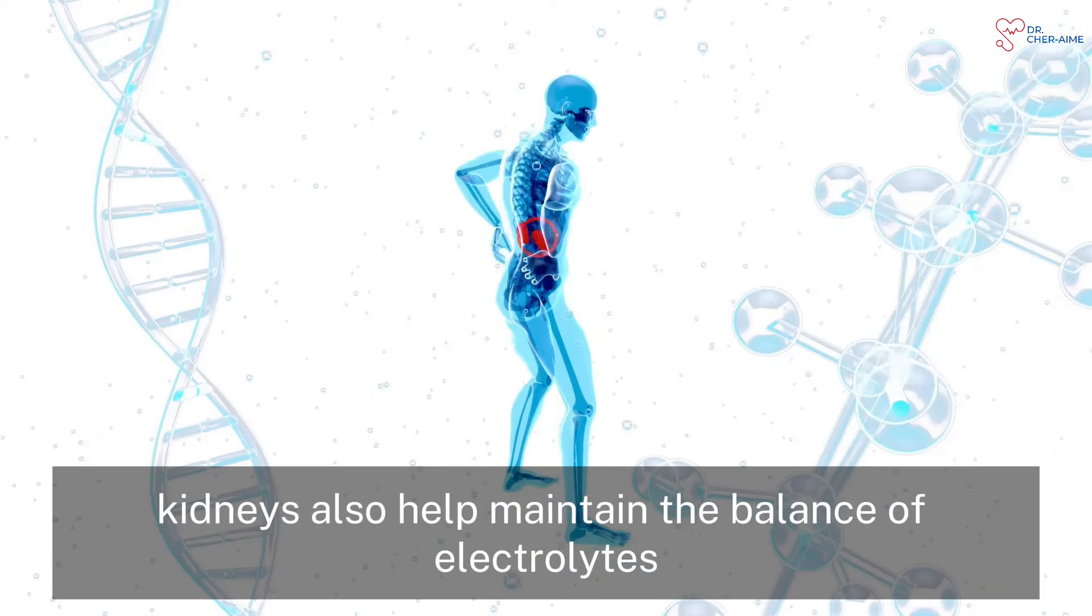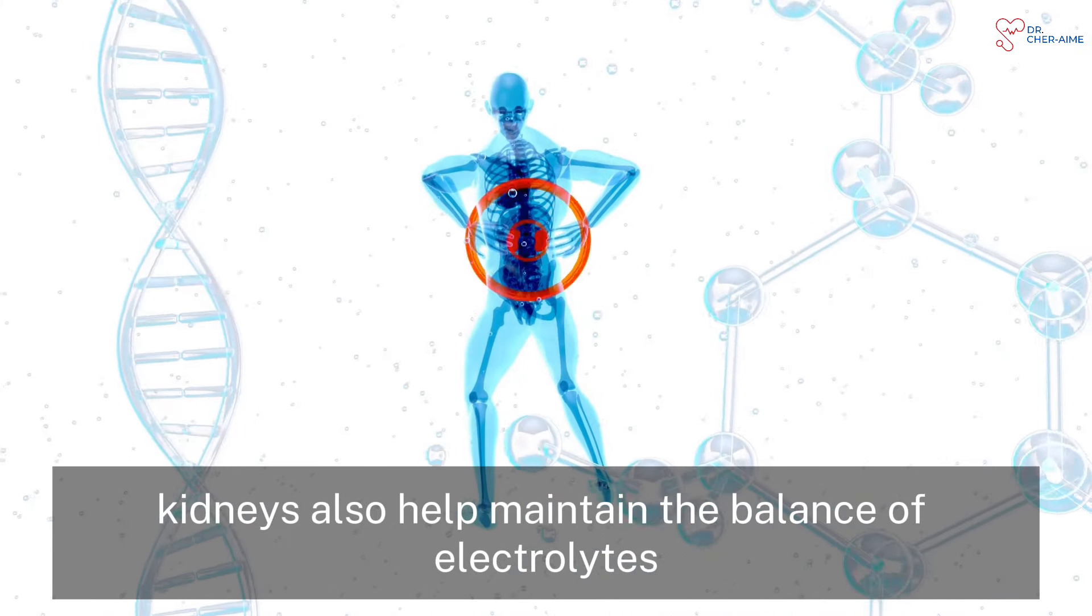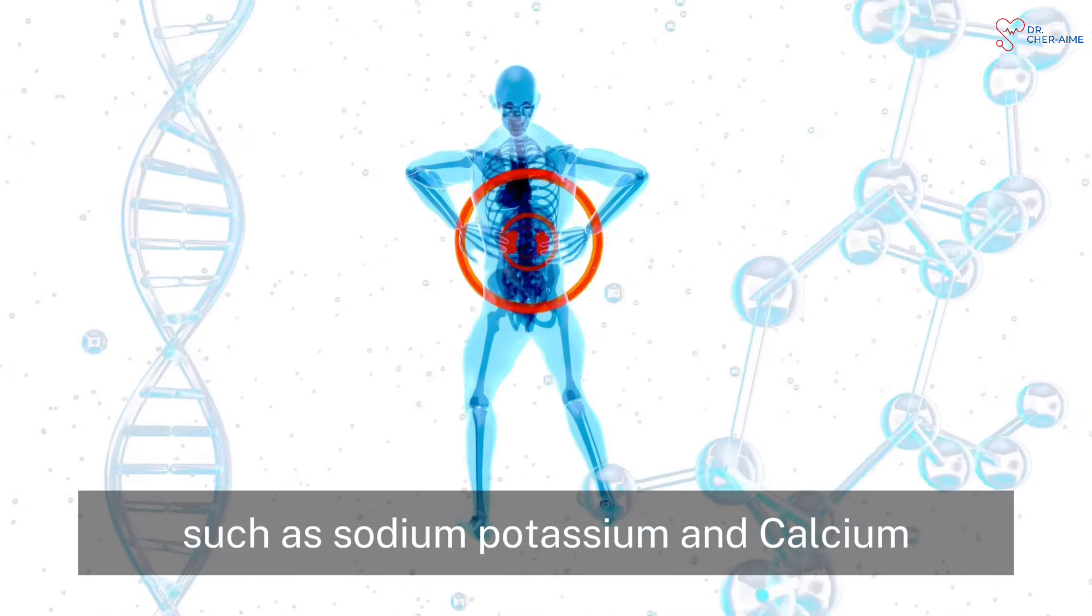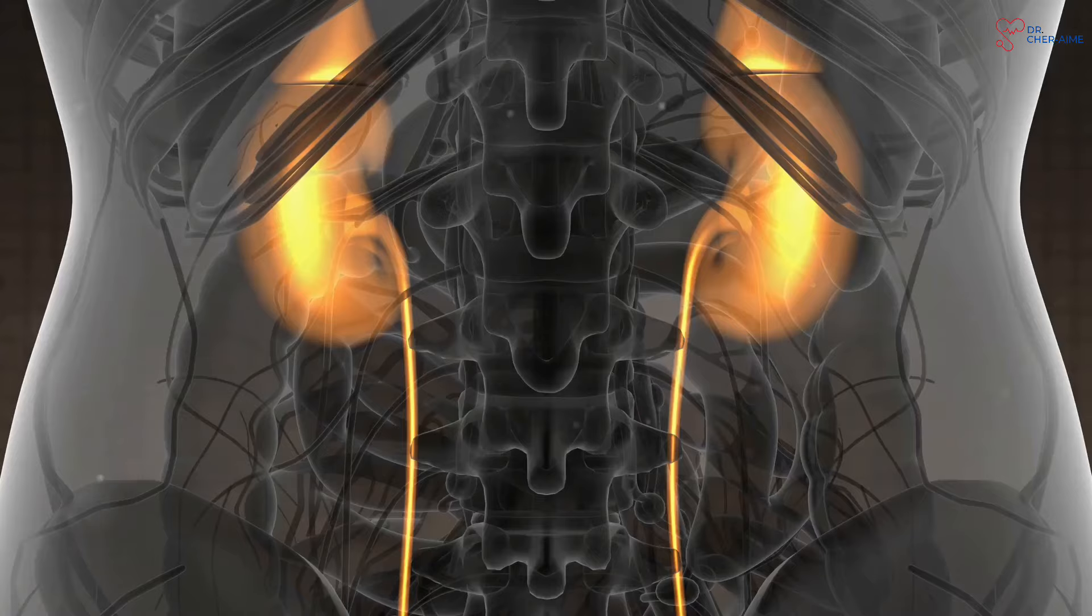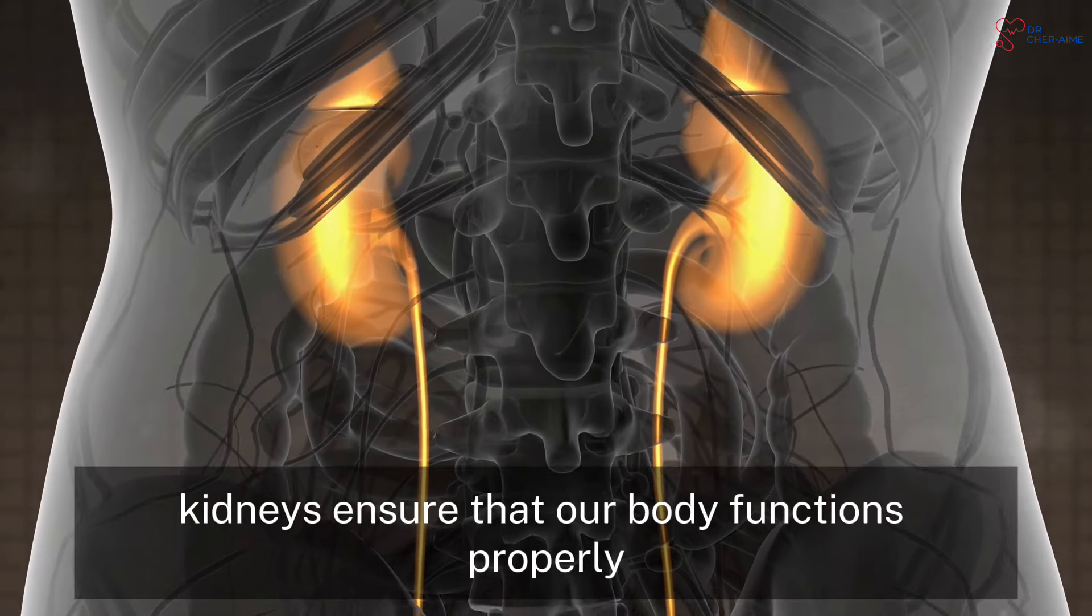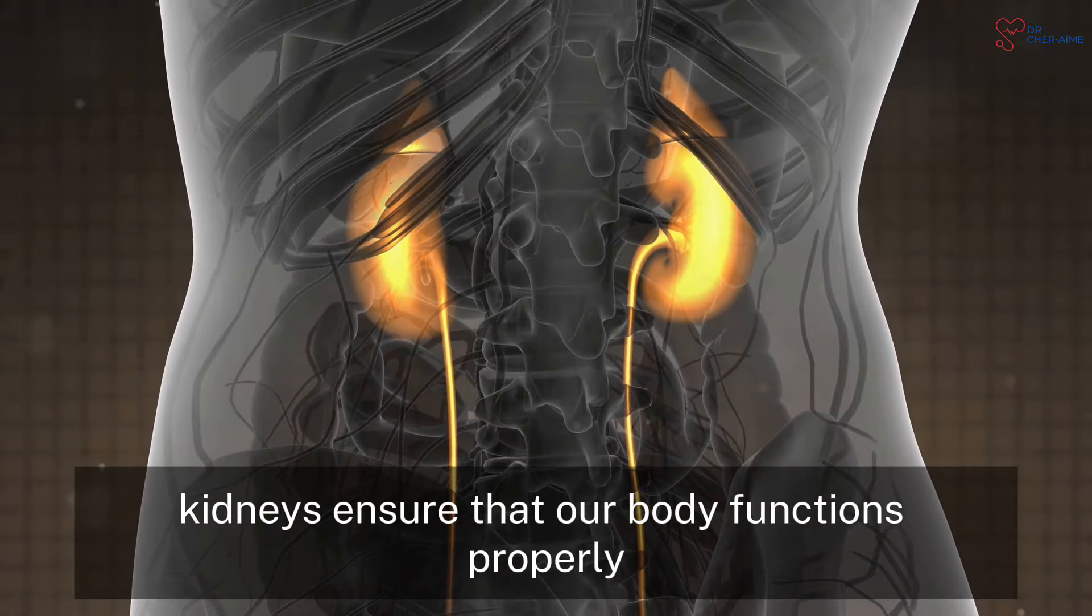Besides cleaning the blood, kidneys also help maintain the balance of electrolytes, such as sodium, potassium and calcium, which are crucial for nerve and muscle function. By balancing these minerals, kidneys ensure that our body functions properly.